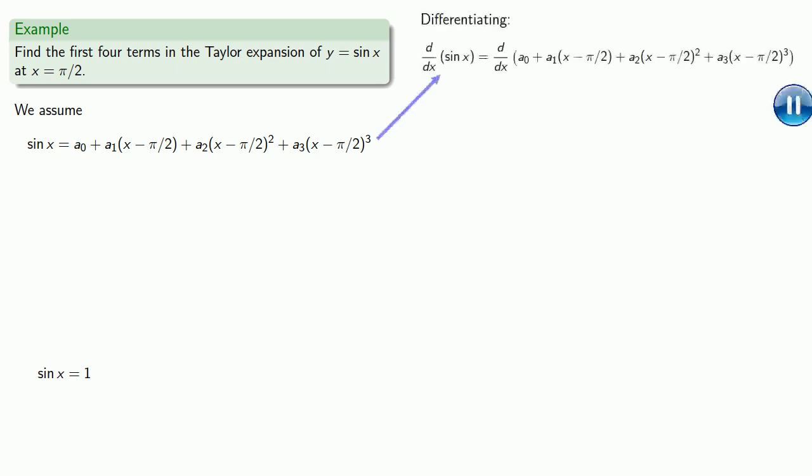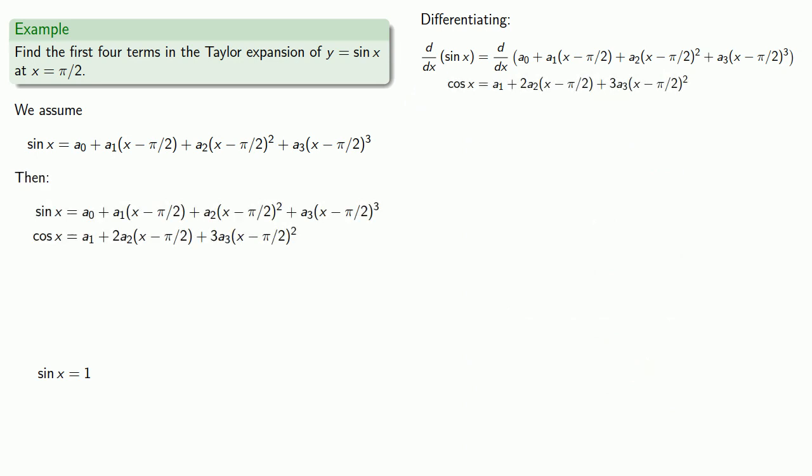We'll differentiate our function. At x equals π halves, most of the terms on the right-hand side will drop out, and we'll be left with an equation which we can solve for a₁.